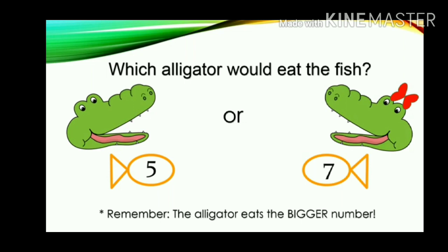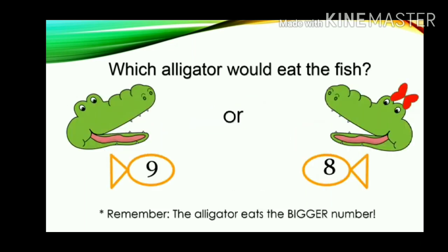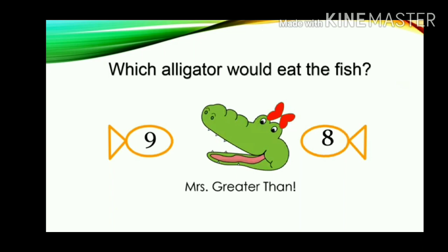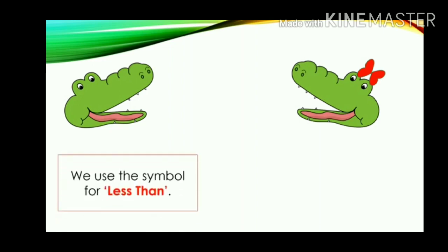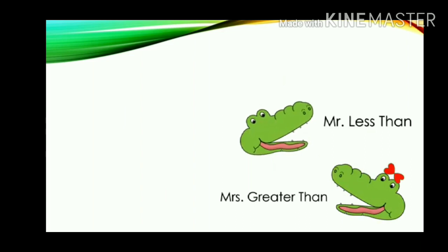The alligator eats the bigger number — always the bigger number. So the alligator eats 7. Now which alligator would eat the fish — 9 or 8? Remember, the alligator eats the bigger number. Which is bigger — 9 or 8? Yes, 9 is the bigger number. So we use the symbol for Mr. Less and the symbol for Mrs. Greater Than.